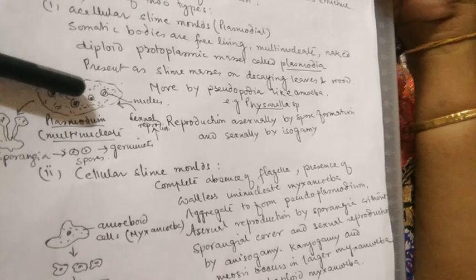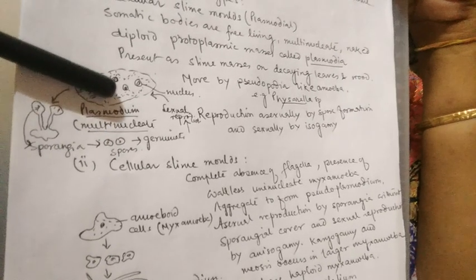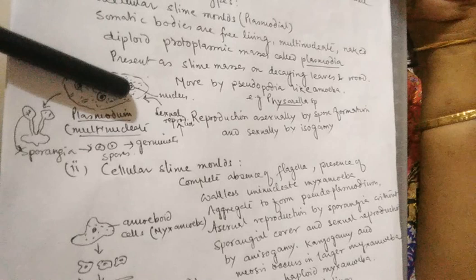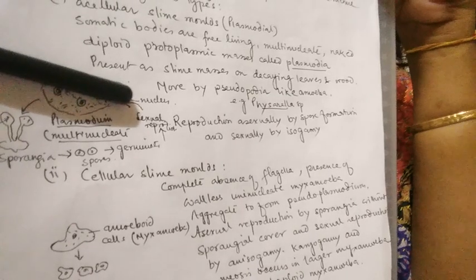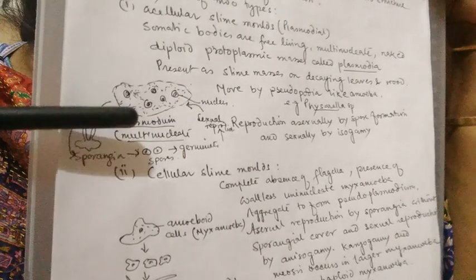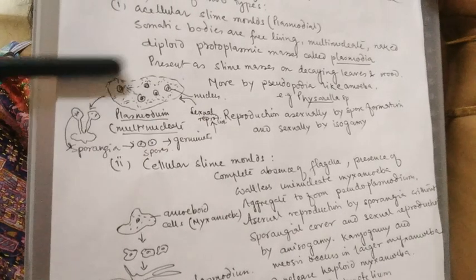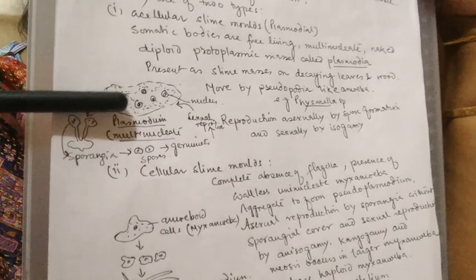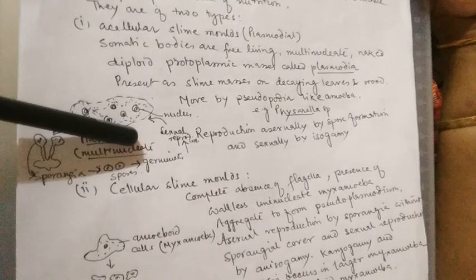There are two types of slime molds. The first is the acellular slime mold, where the somatic bodies are free-living, multinucleate, naked, diploid protoplasmic masses — meaning they have no proper cell covering, with diploid nuclei having twin chromosomes. This structure is called plasmodium.